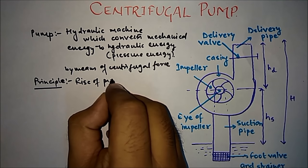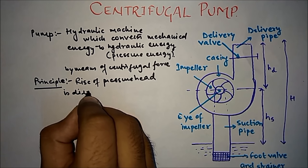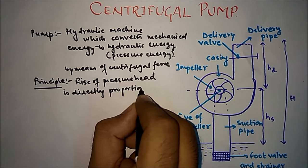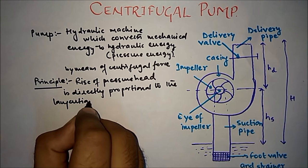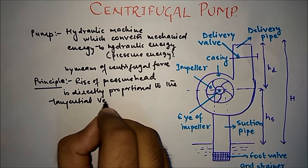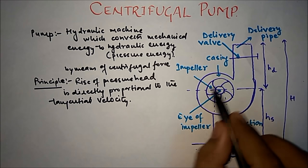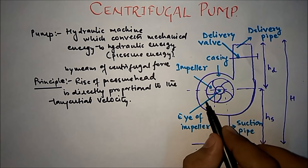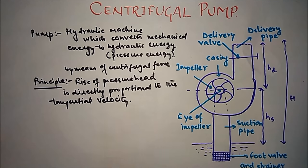So the principle states: the rise of pressure head is directly proportional to the tangential velocity of the water in the casing. The outlet pressure head is directly proportional to the tangential velocity of water in the casing. That is the principle — short and sweet.